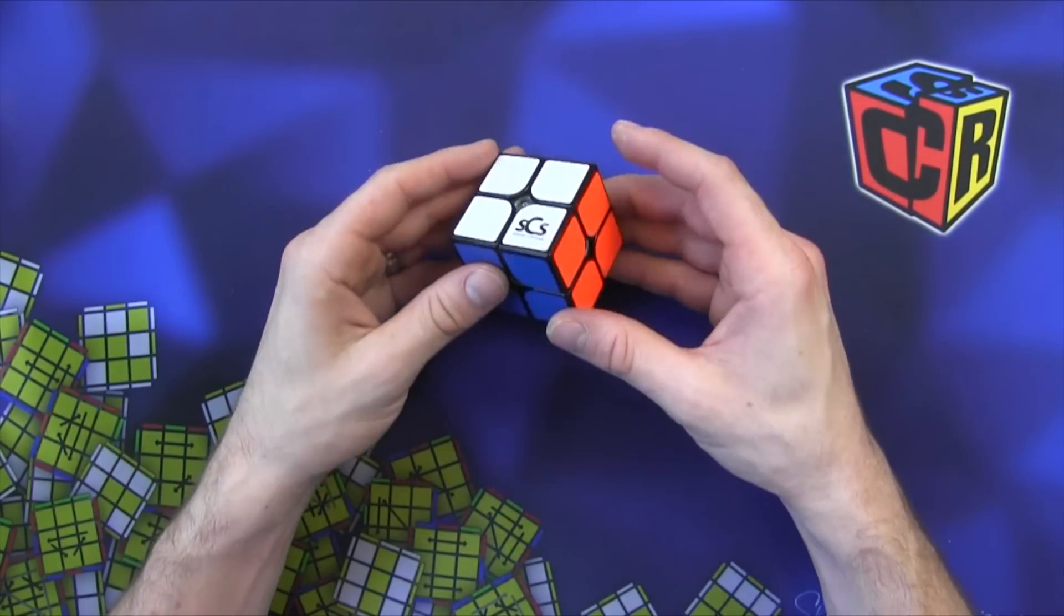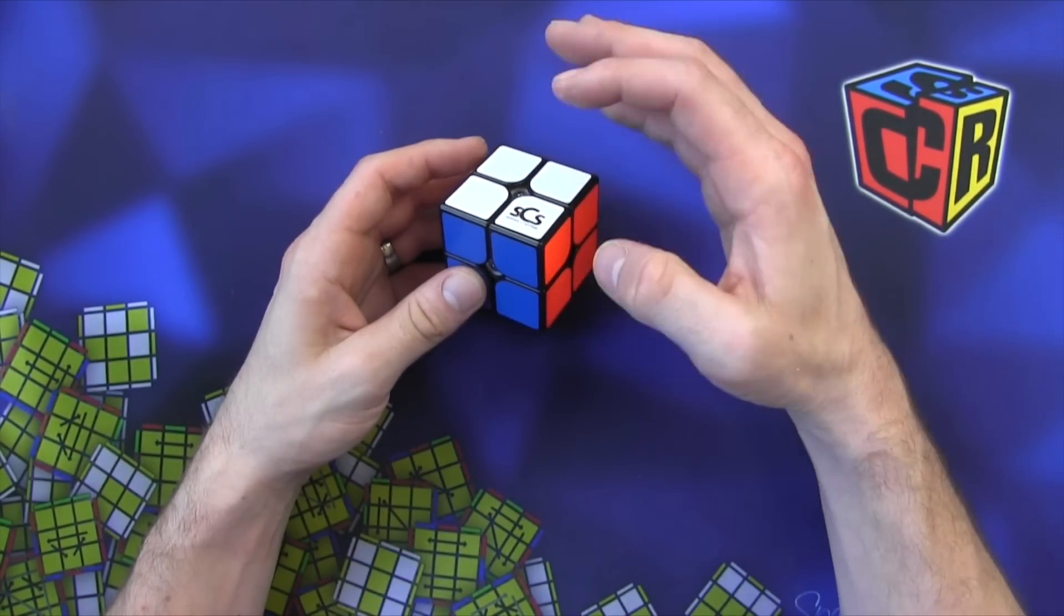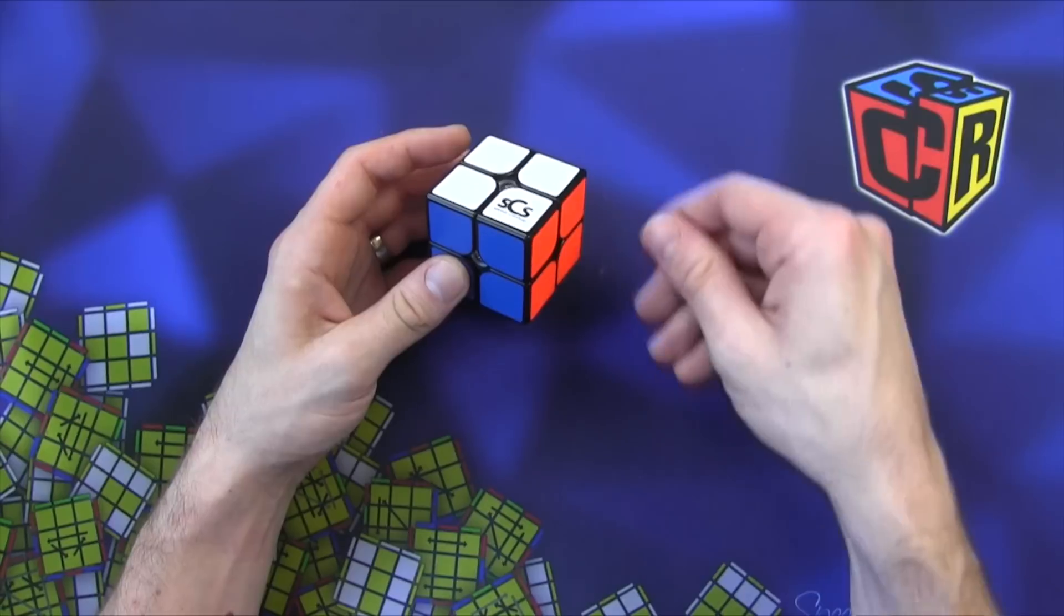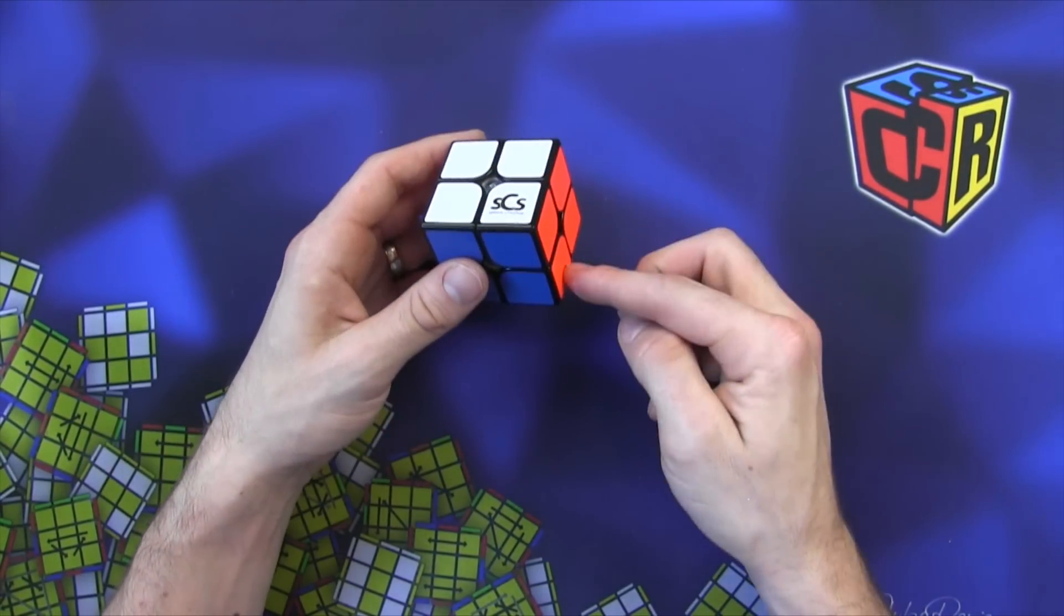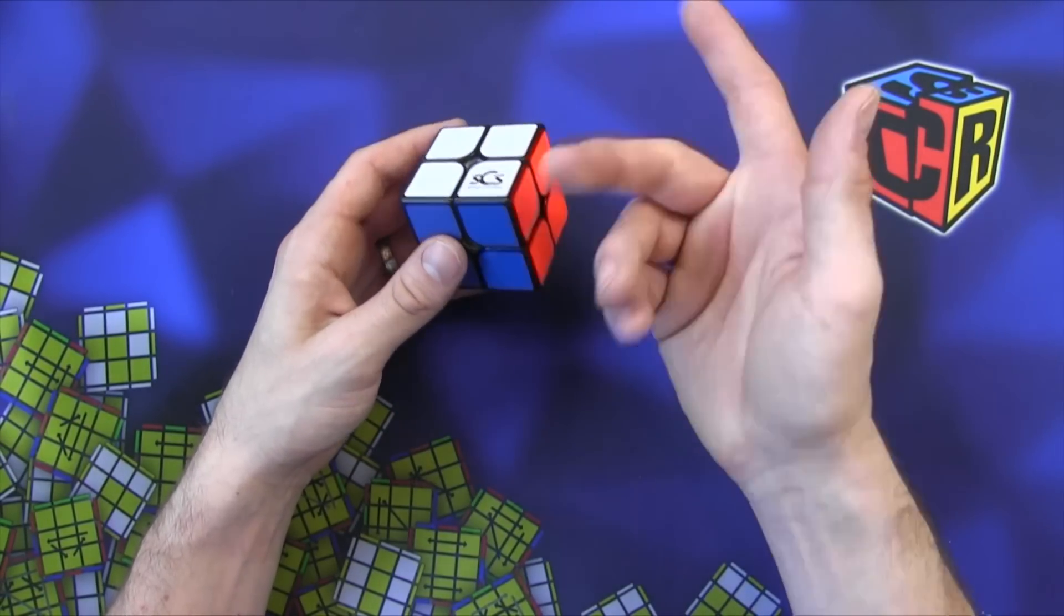Now the way we solve blind is we just move piece by piece. We swap and swap and swap. We just keep swapping those two pieces and what we do is we set up a piece to there, swap, move it back. Set up another piece, swap, move it back.